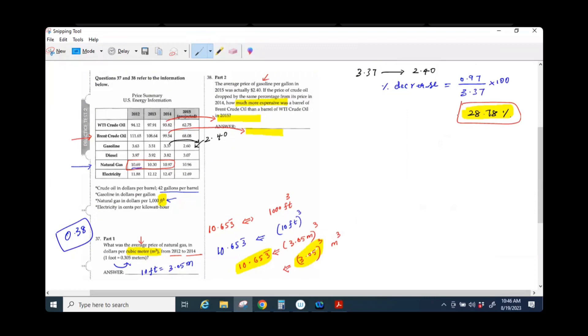It dropped by this much, so what is the original value here? The WTI crude oil is $93.82. If it drops by this much, and then the Brent crude oil was $99.54.